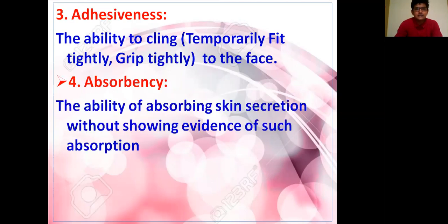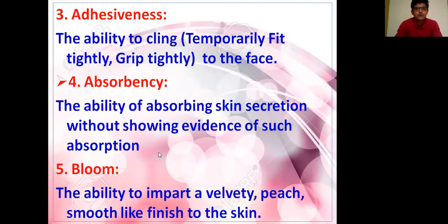The fourth property is absorbency — the ability to absorb skin secretions without showing evidence of such absorption. Because of this property, sweat secreted is absorbed with no visible evidence on the face. The last property is bloom — the ability to impart a velvet, peach, smooth-like finish to the skin, giving a velvety, peach, and smooth finish. These five are the important properties of face powder.